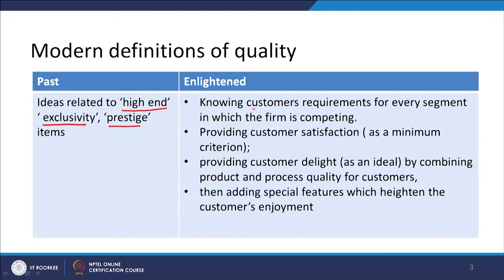But now, what is happening is a totally different type of scenario. I am saying it is the enlightened view of quality. What is this enlightened view? It says that knowing the customer's requirement — to understand your customer requirement — is one important aspect of quality.